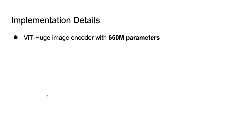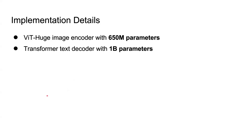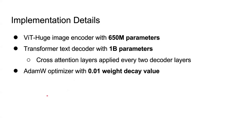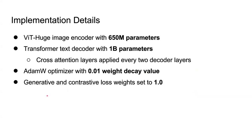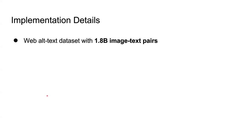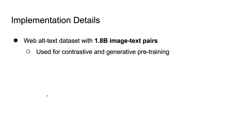As for implementation details, the model uses a ViT-Huge image encoder and a transformer text decoder with 650 million and 1 billion parameters respectively, with cross-attention layers applied every two decoder layers. The AdamW optimizer was used and the weights for contrastive and generative losses were both set to one. Pre-training images were resized and cropped to 224x224 for localization awareness, and a noisy web alt-text dataset with 1.8 billion image-text pairs was used for generative and contrastive pre-training.